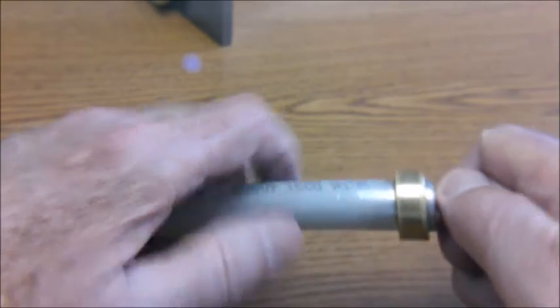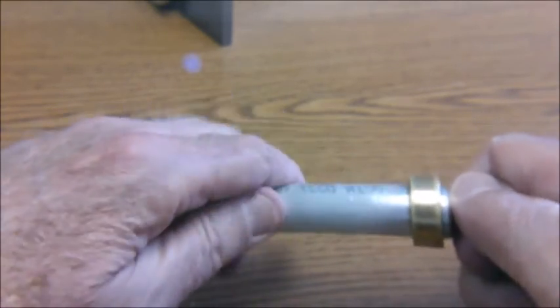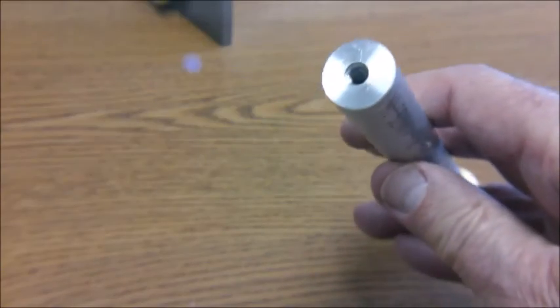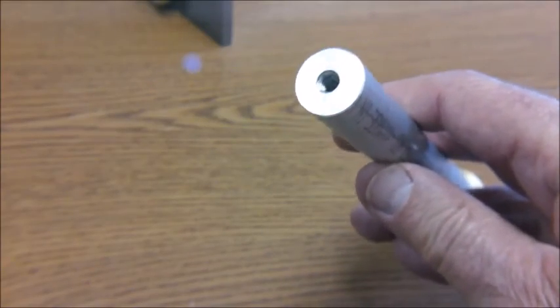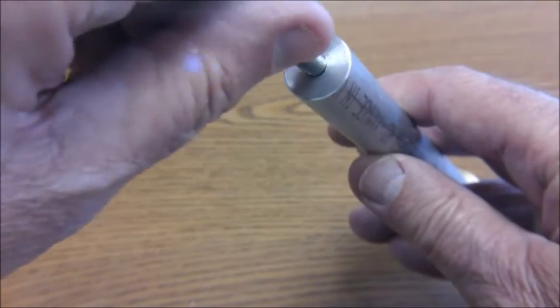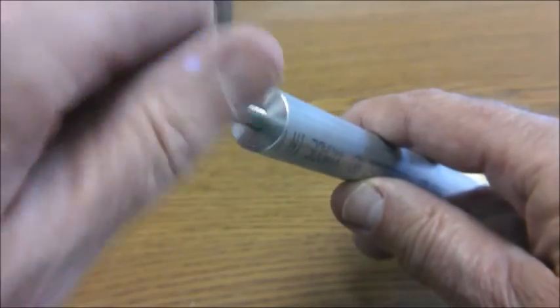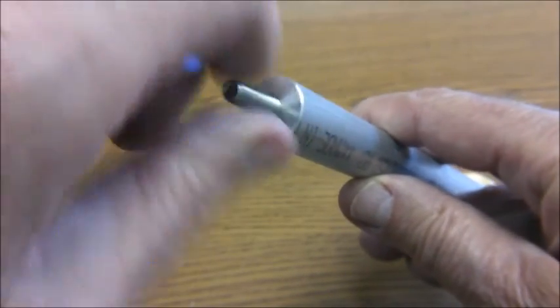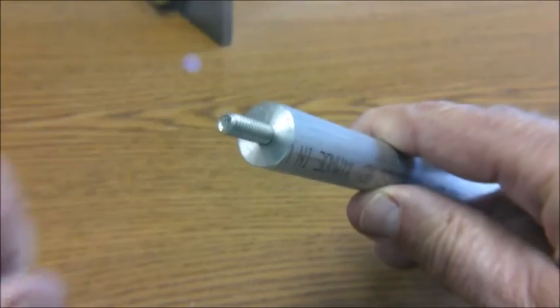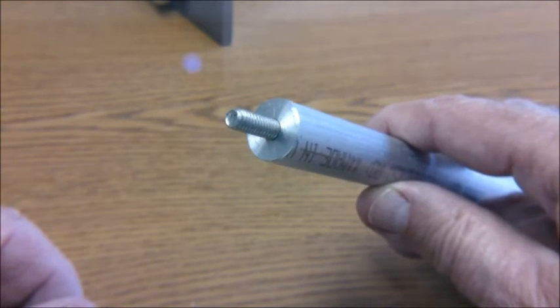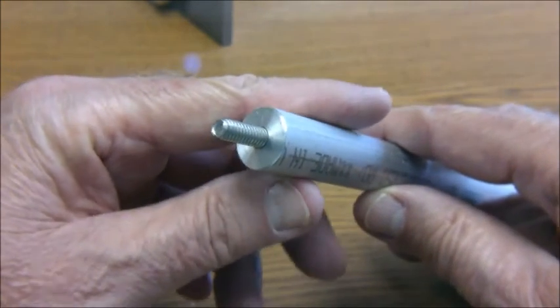And on the other end of the piston, I drilled the hole and tapped it for a quarter twenty. And put a short piece of quarter twenty all thread in there. And then that will turn into the ram on the arbor press.